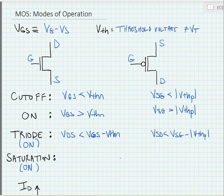Now, when the device is in triode, it behaves like a linear resistor. The resistance is dependent upon the gate to source voltage.